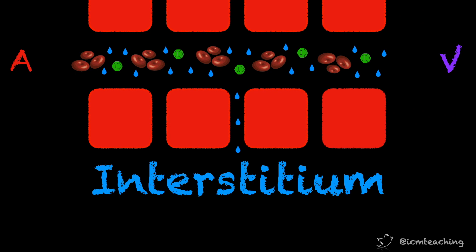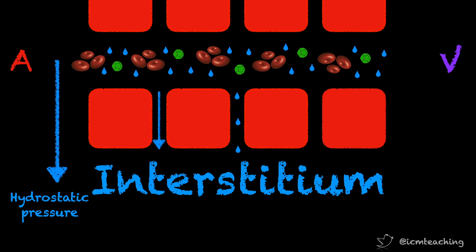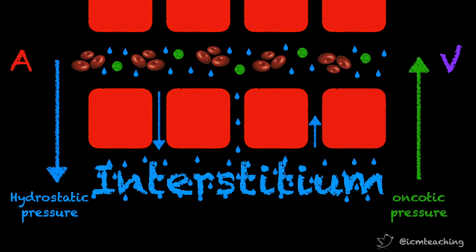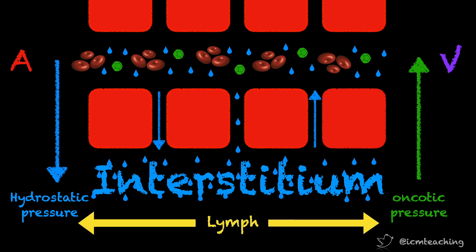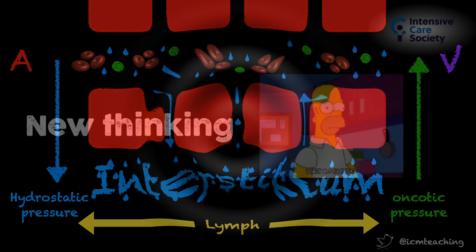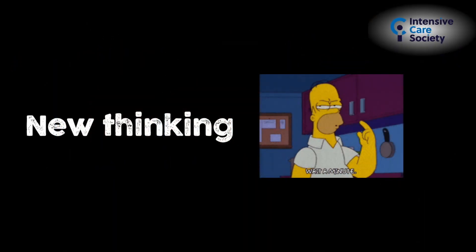We were taught that there's a hydrostatic pressure gradient from the capillaries to the interstitium, down which fluid leaks at the arterial side of the circulation, and an opposing colloid osmotic pressure gradient that draws fluid back into the vessels at the venous end. Any excess fluid is returned to the circulation in the great veins by the lymphatics. But we now have a better understanding of this fluid flux in what has been called a revised or extended Starling principle.